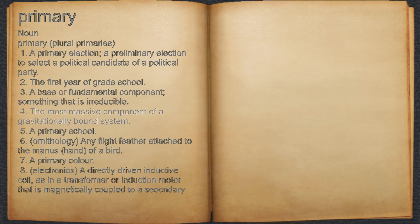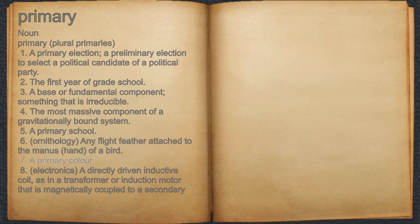4. The most massive component of a gravitationally bound system. 5. A primary school. 6. Ornithology: any flight feather attached to the manus, or hand, of a bird. 7. A primary color.